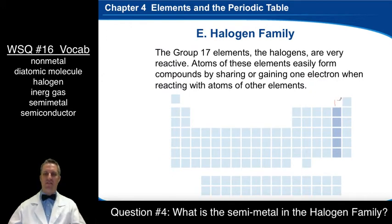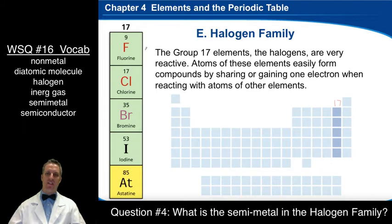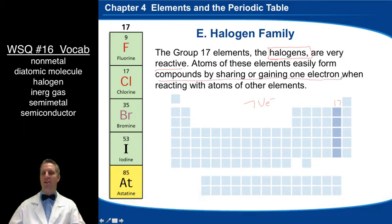Then we have family 17, a very important family. Family 17 is the halogens. That's the name that we're going to hear for this family. They are very reactive. Atoms of these have seven valence electrons, which means they only have one space available for another electron to complete their outer shell. So these easily form compounds by sharing or gaining one electron.